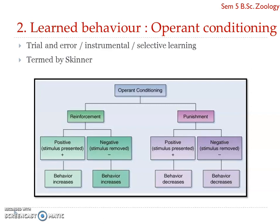With negative punishment, if a particular behavior is performed, the child does not get the video game. So what happens is the child tries to avoid that kind of behavior in order to get the video game. That is negative punishment — through which that kind of behavior can be decreased.